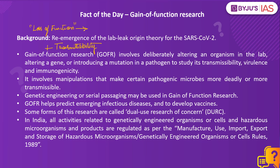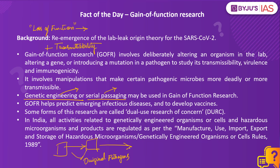Coming back to gain of function research — how is this research done? The methods used are genetic engineering or serial passaging. Genetic engineering involves editing the genetic code to modify the virus. Serial passaging involves allowing the pathogen to grow under different circumstances and observing the changes — for example, grown in one environment, then a portion taken and grown in a different controlled environment, and then compared with the original pathogen. These manipulations can make viruses more deadly or more transmissible. This kind of research carries inherent biosafety and biosecurity risks and is therefore referred to as dual use research of concern.